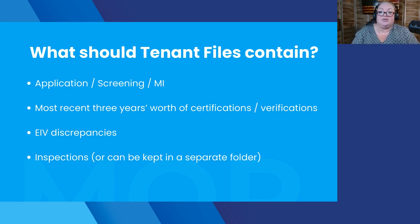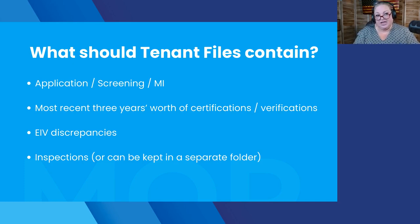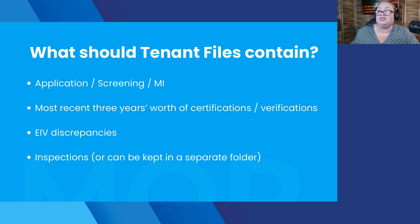You're also going to have the most recent three years worth of certifications — the current year and then two full previous years based on the tenant's certification date. Then everything related to that move-in. The tenant file should also contain anything related to any EIV discrepancies that you found and resolved, and your EIV income and summary reports included as part of move-in, annual, and interims if you are currently doing those.